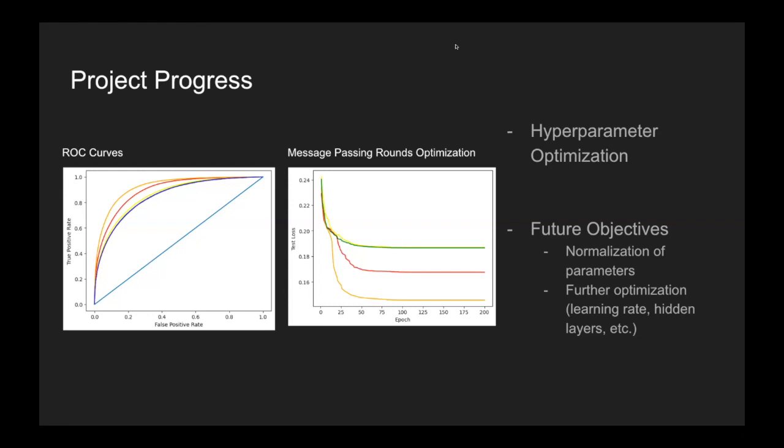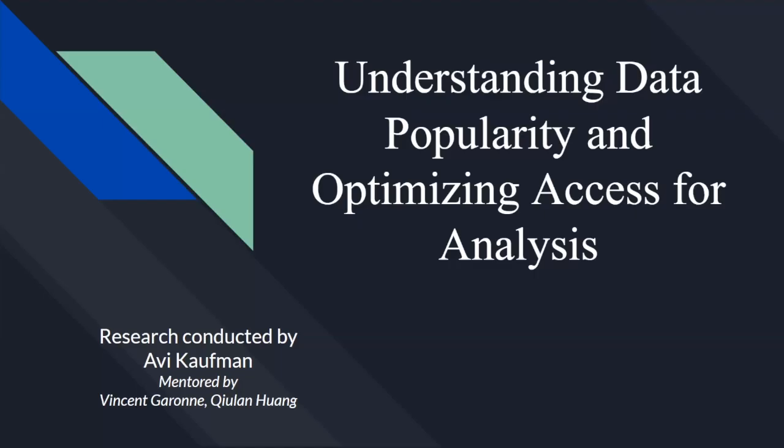All right. Thank you, Hubert. Up next is Avi. My name is Avi Kaufman. I'm an undergraduate student at the University of Iowa, and I am mentored by Vincent Grone and Kulon Hong. And my goal is basically to, or the title is to understand data popularity and optimization access.